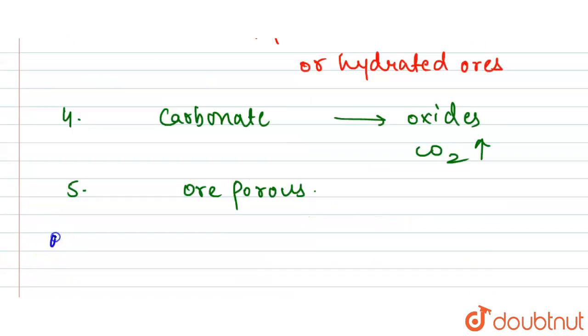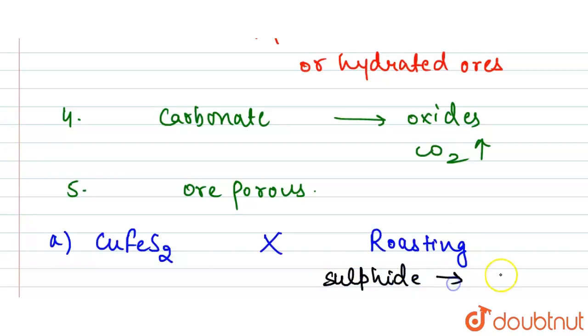Copper pyrites will not be extracted by calcination because we don't have any hydroxide or carbonate. It is done by the roasting process, where we have conversion of sulfide to oxide.